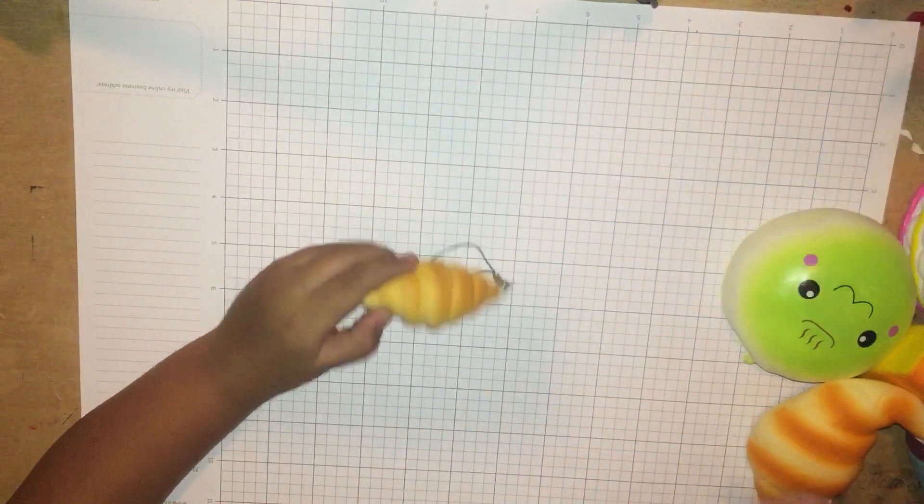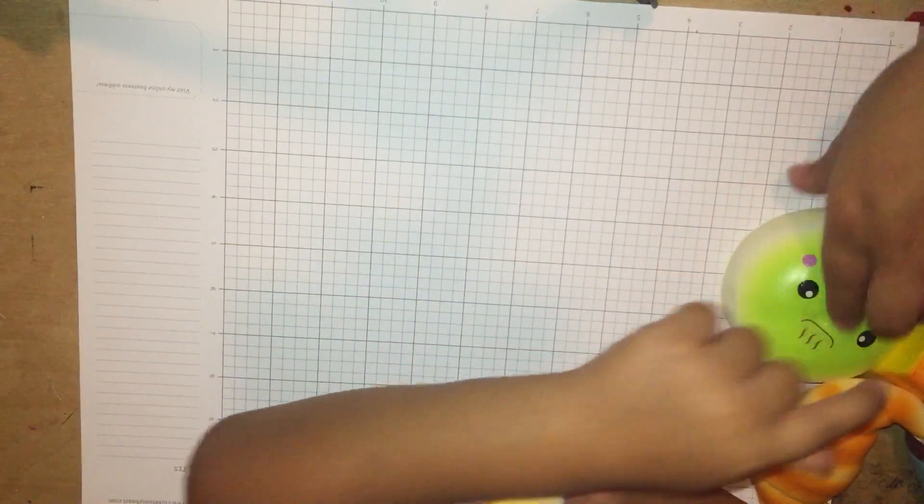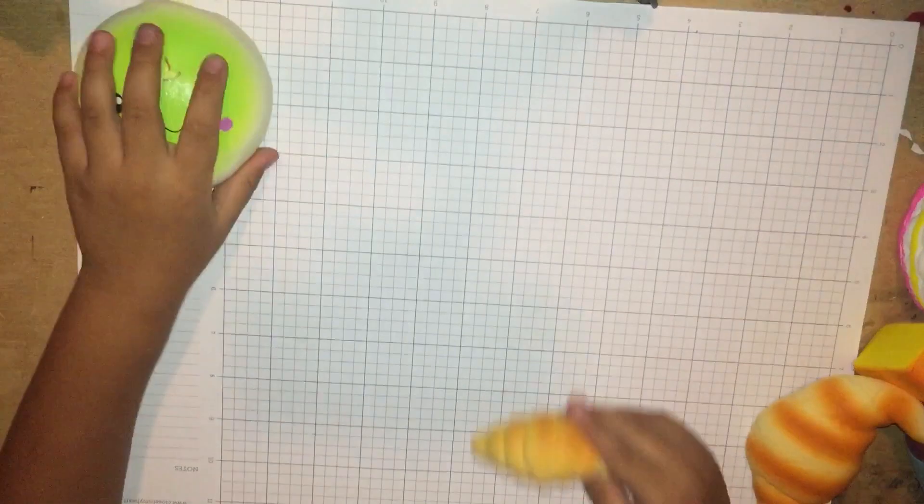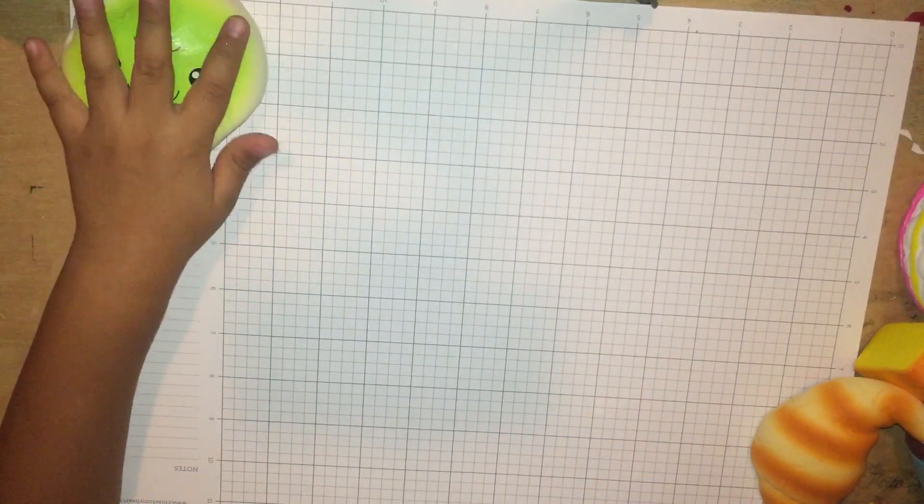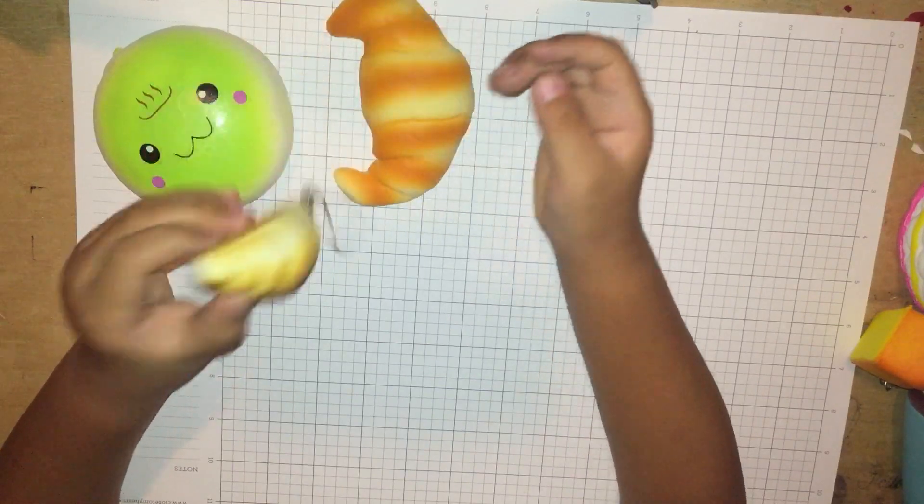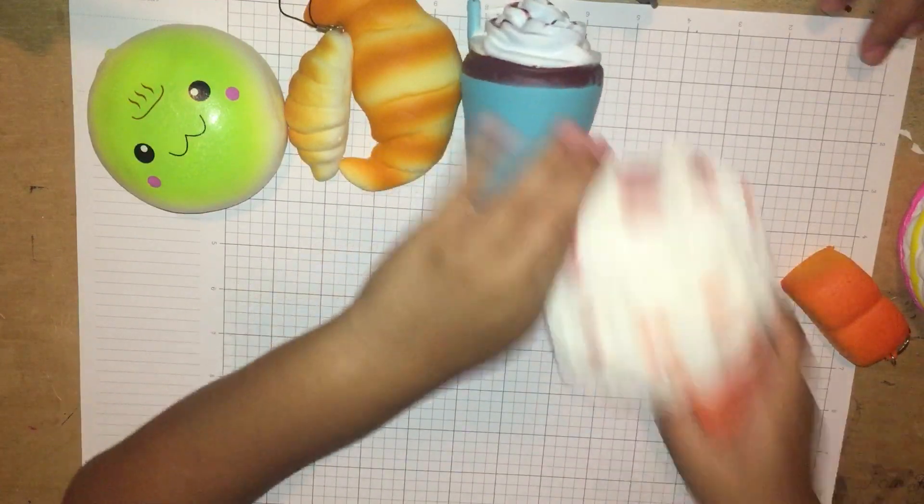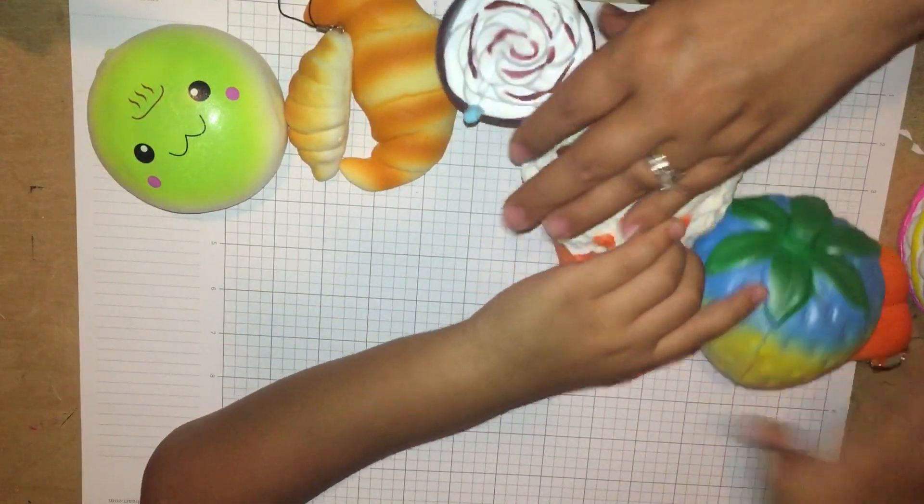So let's lay them all out so they can see all our squishies. Make sure you put it on the white. So that's the steam bun, croissant, baby croissant, coffee, ice cream, strawberries, cake.